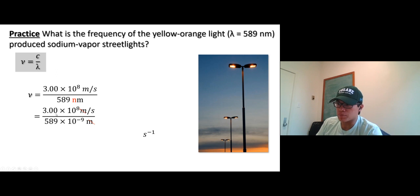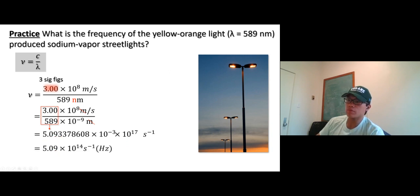So coefficient with coefficient, the multiplier with multiplier. So three over 589, so you get that number and 10 to negative third. 10 to the 8th over 10 to negative nine, you would get 10 to 17. And do the math right here. So it's three six fix. Make sure you get three six fix there. So round down. So 5.09 times 10 to the 14th. 10 to the negative third times 10 to 17 - so it's negative third plus 17 to get 14 there, in Hertz.